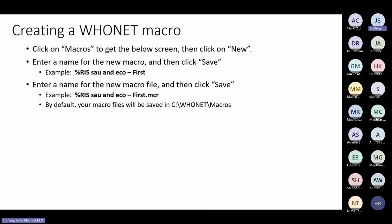Now that I've run an analysis, how do I create a macro? Click on Macros at the bottom of the screen, then click New Macro. Enter a name — for example, '%RIS, Staph aureus and E. coli, first isolate with antibiotic results'. Click Save once to save the macro name, then click Save again to save the macro file. Hoonet will suggest a filename like '%RIS_Staph_aureus_E.coli_first_only.MCR'. By default, your macros go into the Hoonet macros folder.